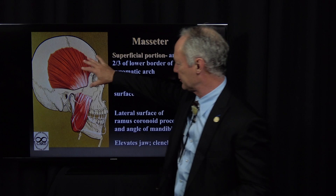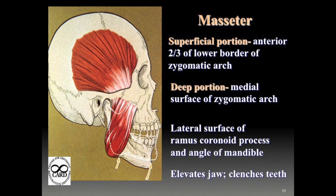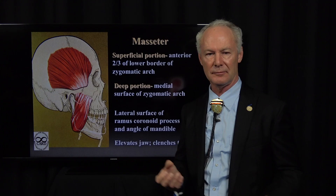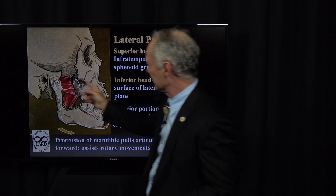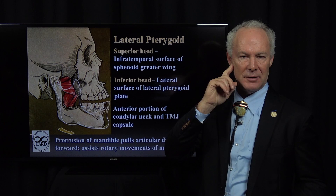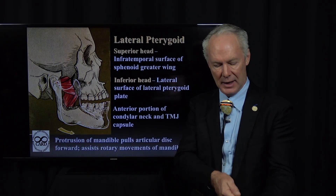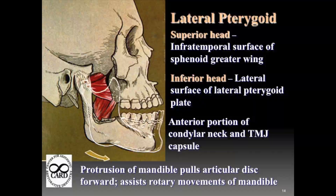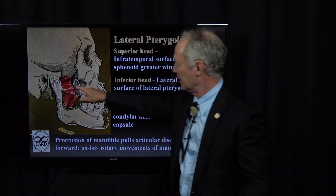Muscles that play a part in this are the masseter and the temporalis muscle — the big muscles of closing — along with the medial pterygoid. They clench the teeth together. The lateral pterygoid is a little positioning muscle that helps position the condyle. When the patient is closing, it's like somebody holding a rope while somebody goes down a cliff — the condyle being the person descending and the lateral pterygoid being the rope. It helps position the condyle and the disc.